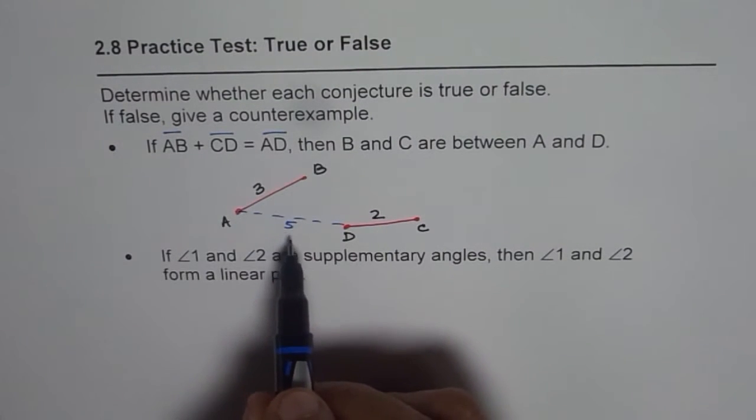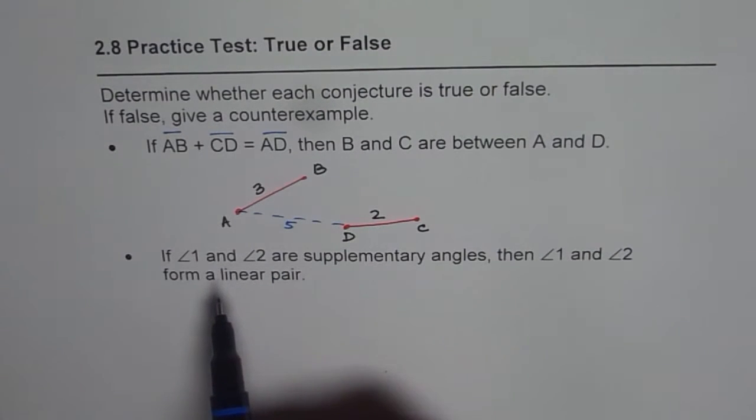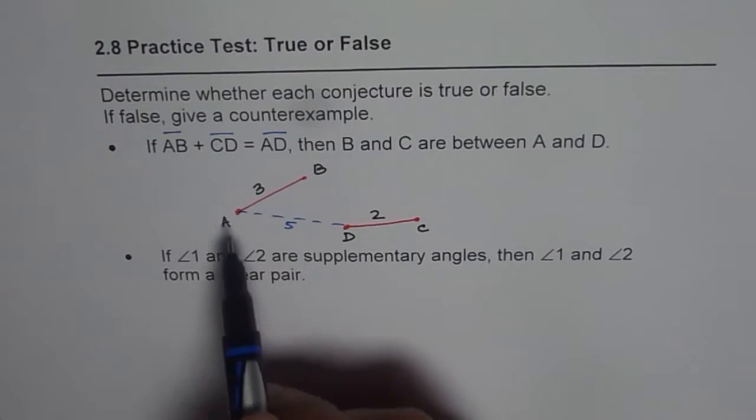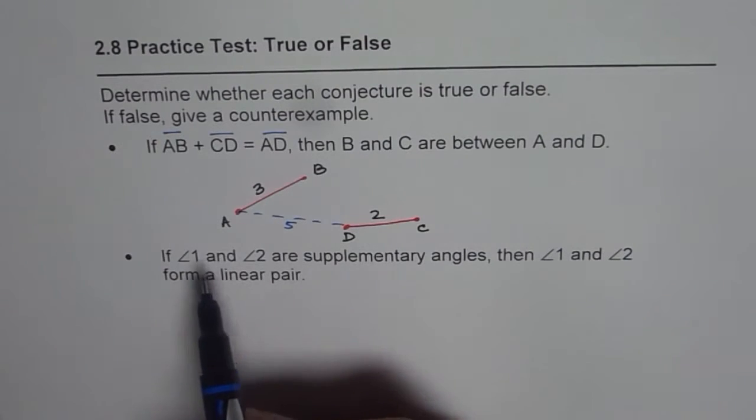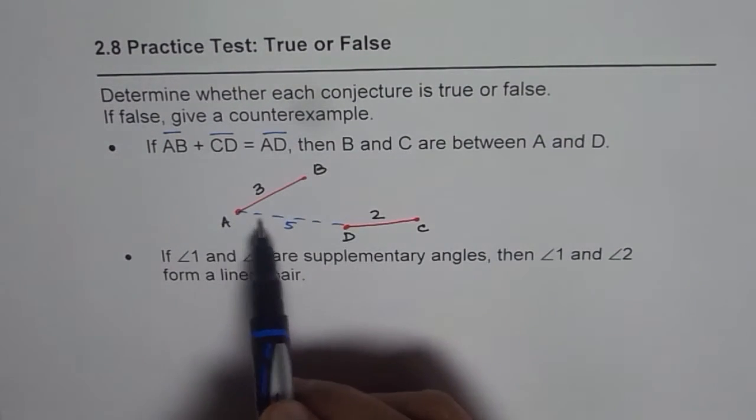In that case, the measurement of these segments, both sides will be equal, right? Three plus two will be five. But clearly you can see that that does not prove that point B and C are between A and D.